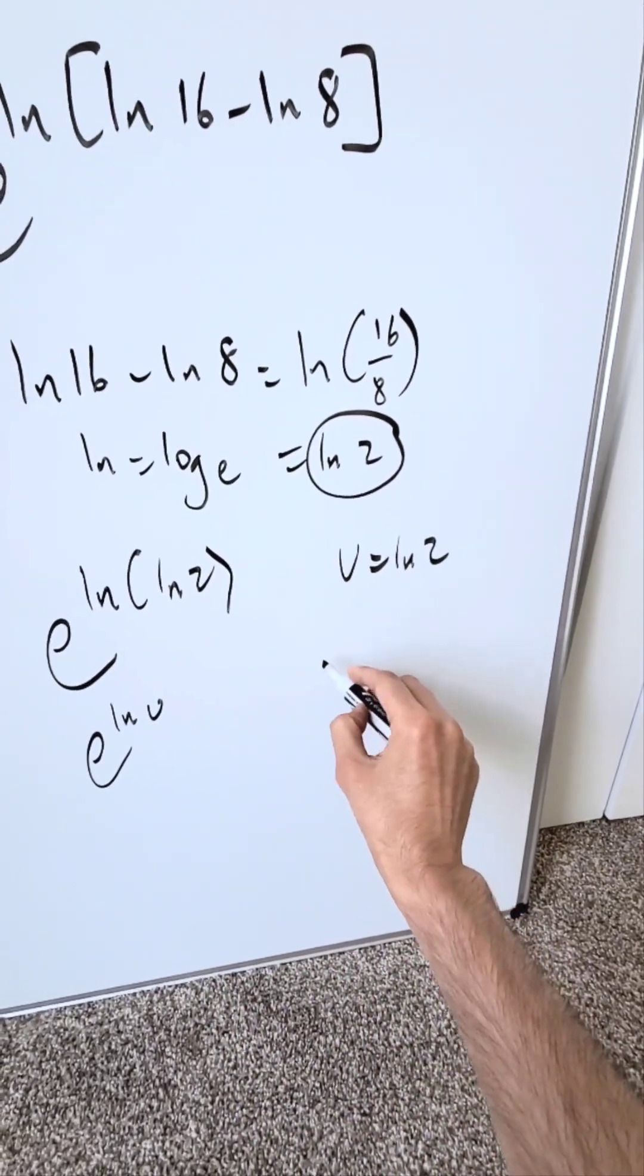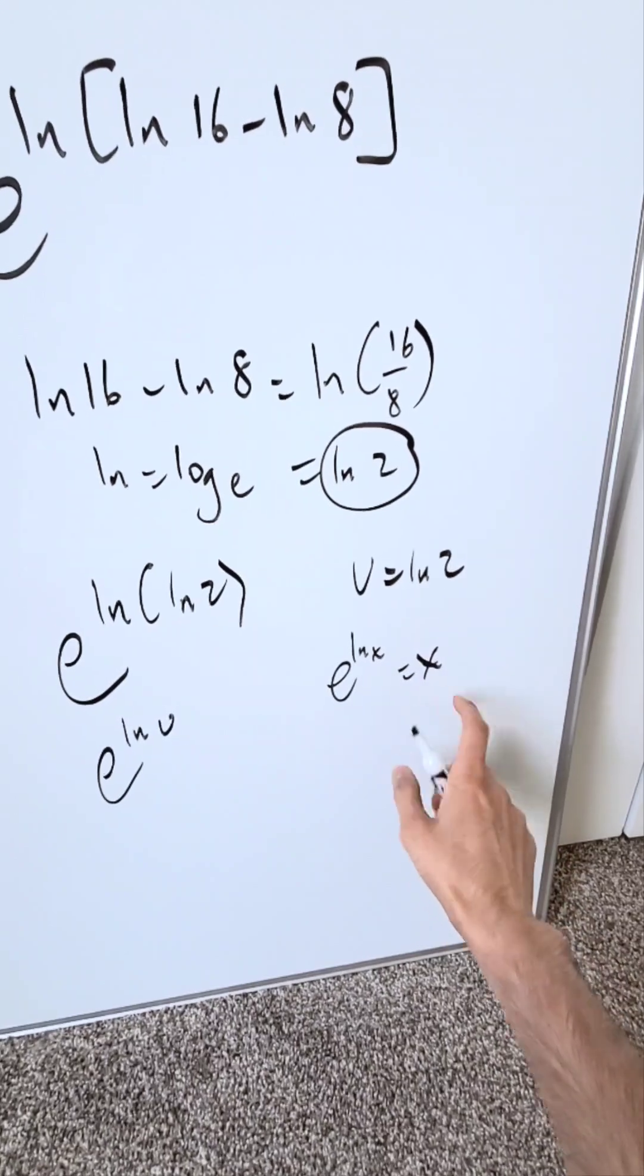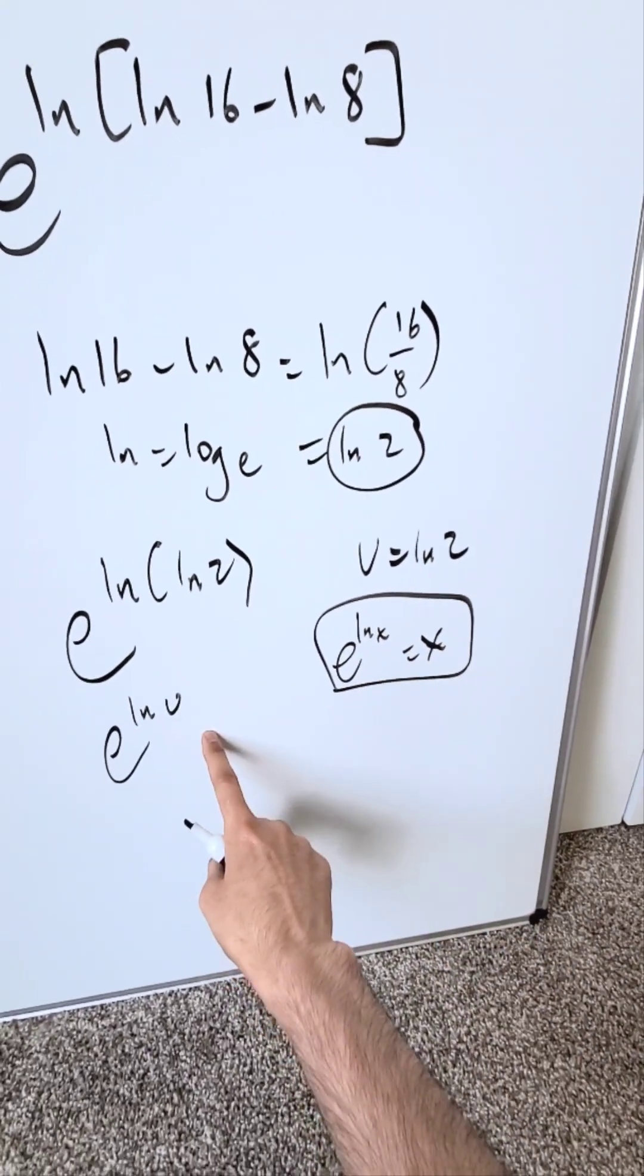Think of this fundamental identity. e to the power of natural log x is always equal to x. It's a known identity we can apply here.